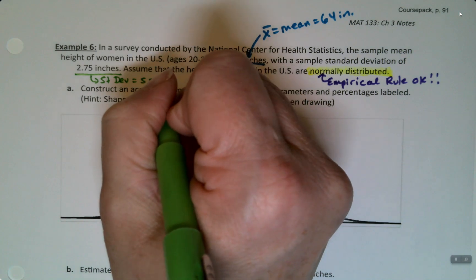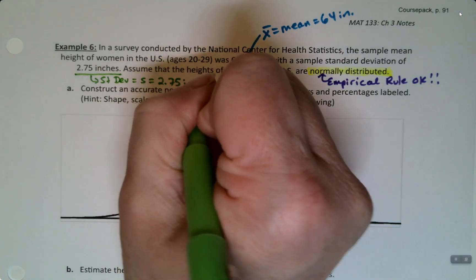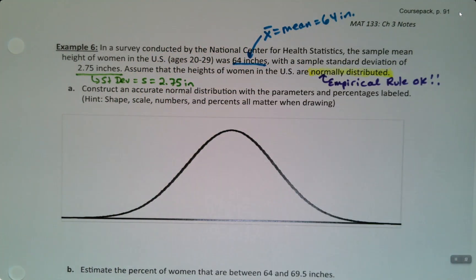And that's S. Actually, I shouldn't say that. It was a survey conducted, so this was a sample, right? So that's why it's X bar and S. If it was a population, you'd use mu and sigma.